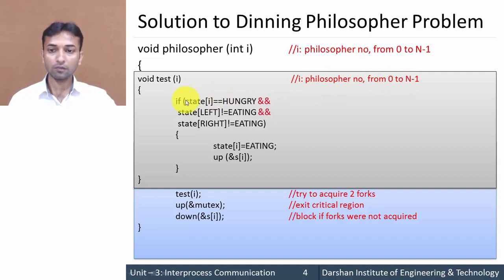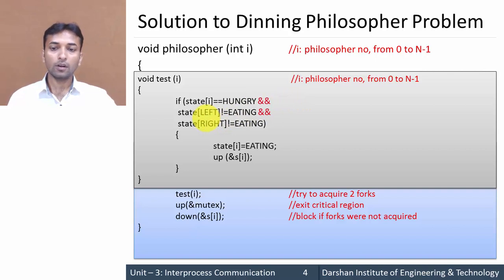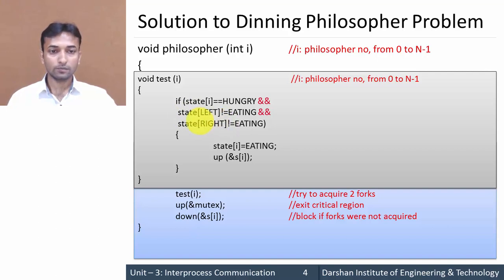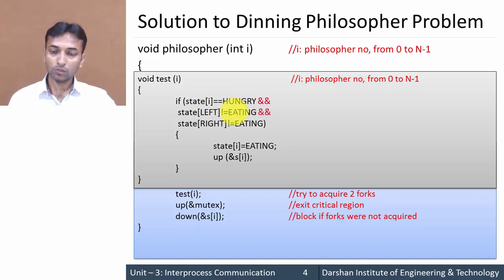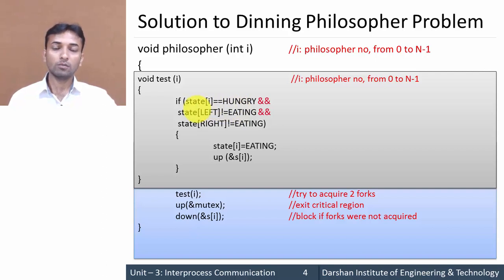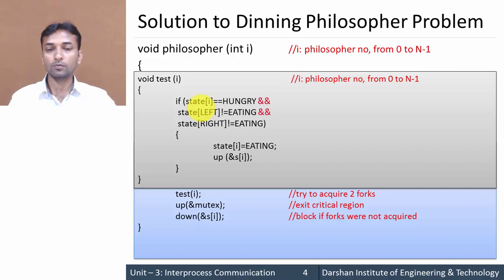In the test(i) function, the condition checked is: if state[i] == HUNGRY and state[LEFT] != EATING and state[RIGHT] != EATING. The first condition means this philosopher is hungry. The second means the left neighbor is not eating, so the fork between the current philosopher and the left neighbor is free. The third means the right neighbor is not eating, so the fork between the current philosopher and the right neighbor is also free. If this condition is true, the philosopher can access both forks.